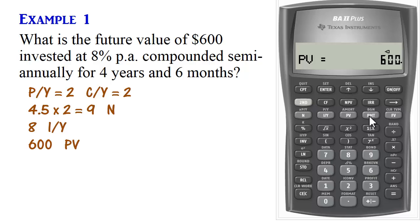But if you didn't clear time value of money, you'll have to do 0 payment to make sure no payment is included. And then finally, you can compute future value. So the future value is $853.99.